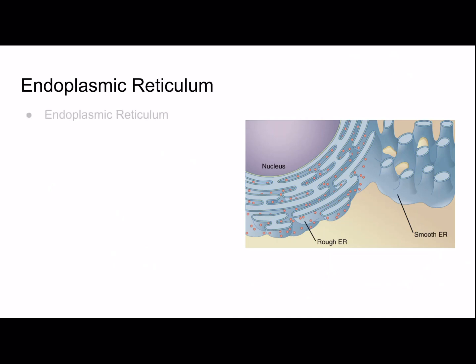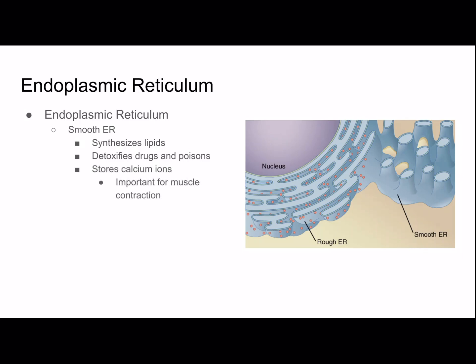Endoplasmic reticulum — there's smooth ER, where lipids are synthesized, it also detoxifies drugs and poisons, and it stores calcium ions, which is very important for muscle contraction. The rough ER is the site of protein synthesis; it's called rough because, as you can see in the picture, there are a lot of ribosomes all around it, giving it the appearance of being rough. The protein will go from here to the Golgi body. Smooth ER and rough ER are connected but do have different structure and function.